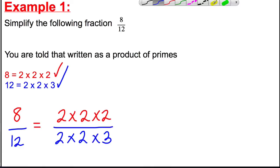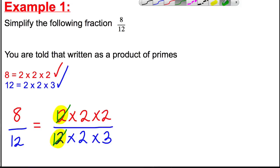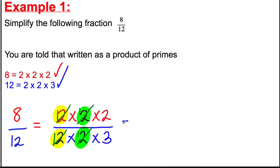You'll notice there's a factor of 2 on the top and bottom. If we divide top and bottom by 2, we get 1s in their place — and 1 multiplying has no impact on the fraction. We have another 2 on top and bottom, so we divide by those 2s as well, getting 1s again. We're left with 2 thirds, since 1 times 1 times 1 times 1 times 2 is 2, and 1 times 1 times 3 is 3. This is the simplest fraction.